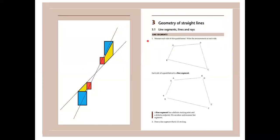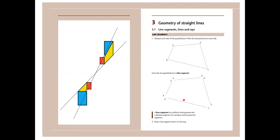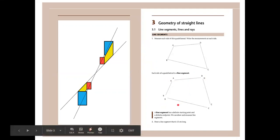Geometry of straight lines: line segments, lines, and rays. Line segments — measure each side of this quadrilateral, so you must measure AB, BC, CD, and AD, and then write the measurements at each side. Each side of a quadrilateral is a line segment, so AB is a line segment, BC is a line segment, CD and AD are line segments.